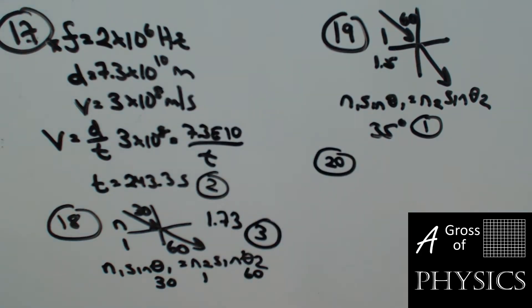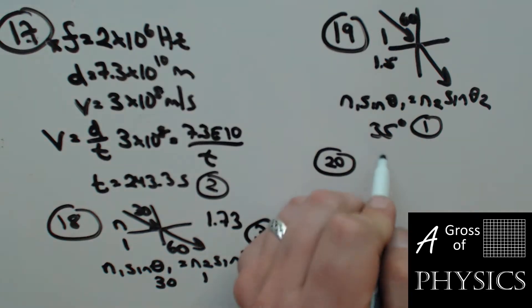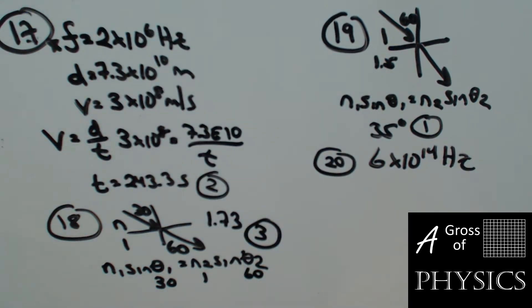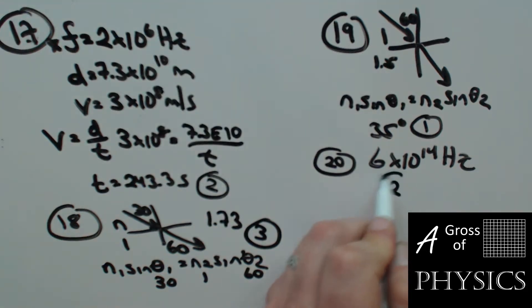Number 20: we have an electromagnetic wave with a frequency of 6×10¹⁴ hertz. Which type of electromagnetic wave does this represent? All the other information in the diagram is extraneous. At 6×10¹⁴ hertz, that's green light again, so it has to be visible light. Choice two.